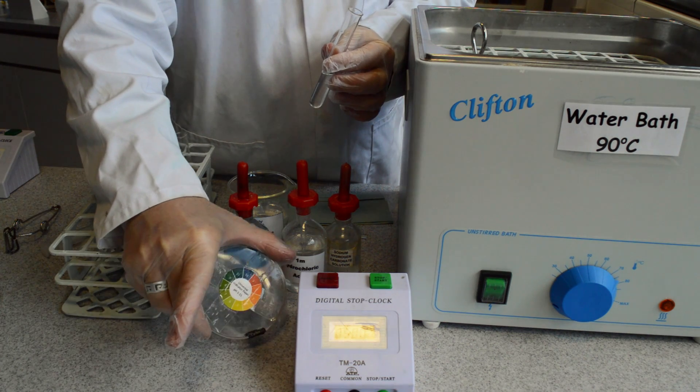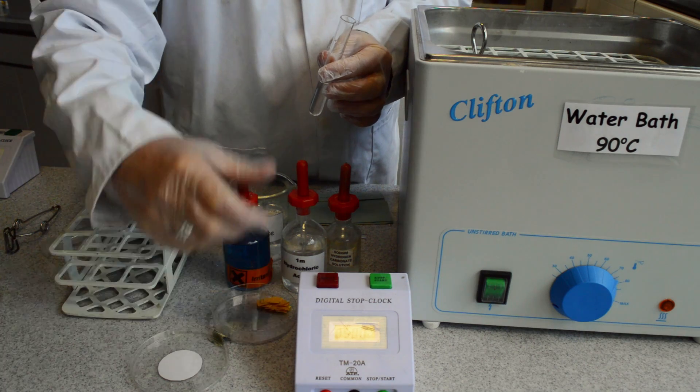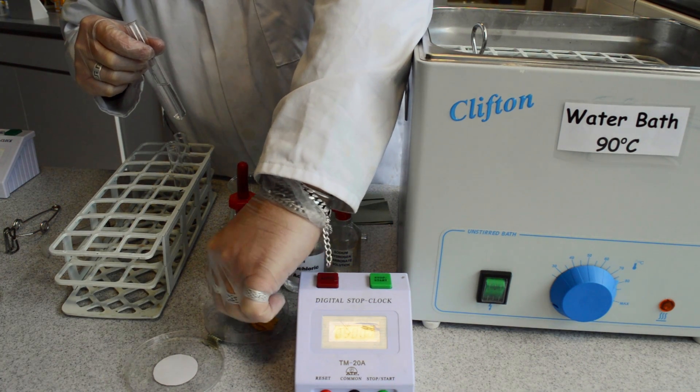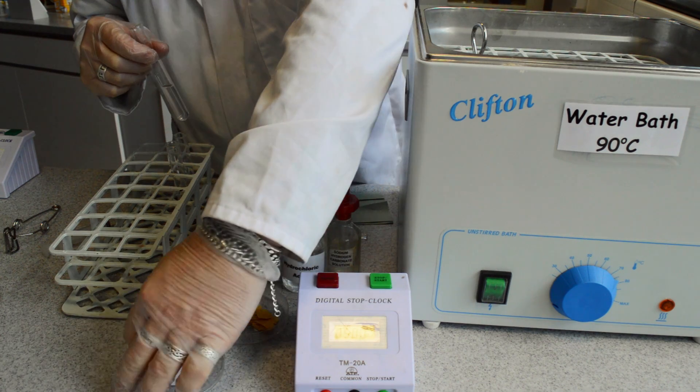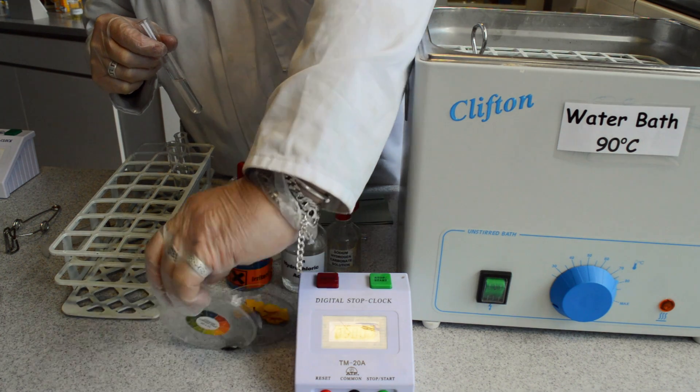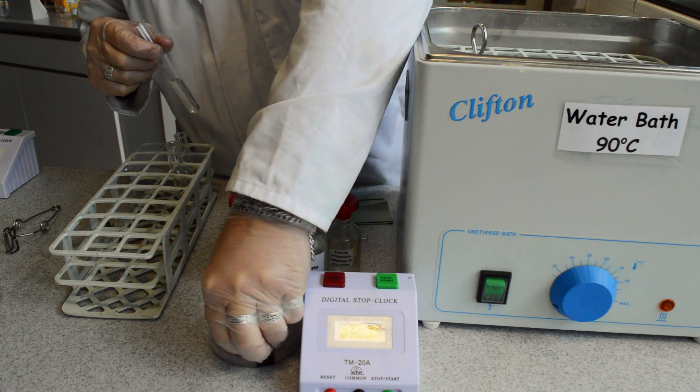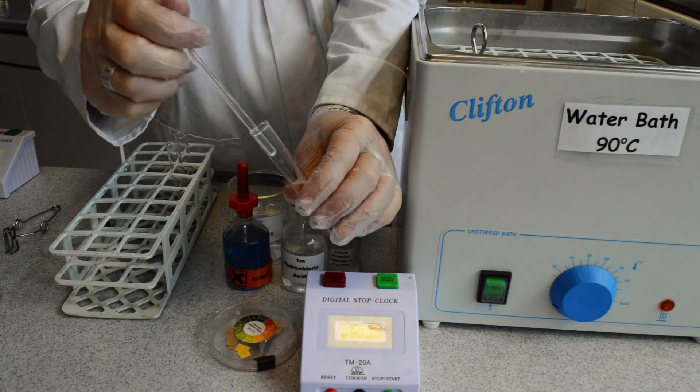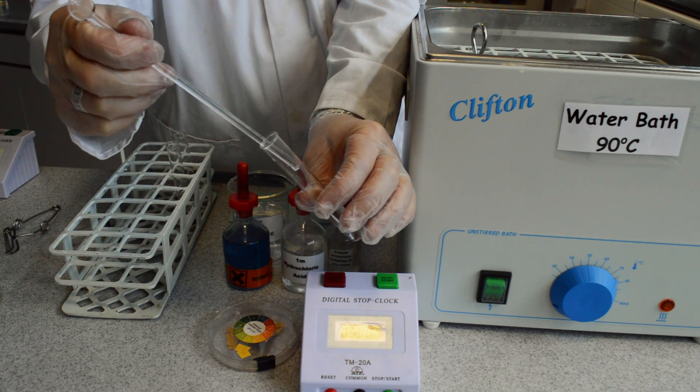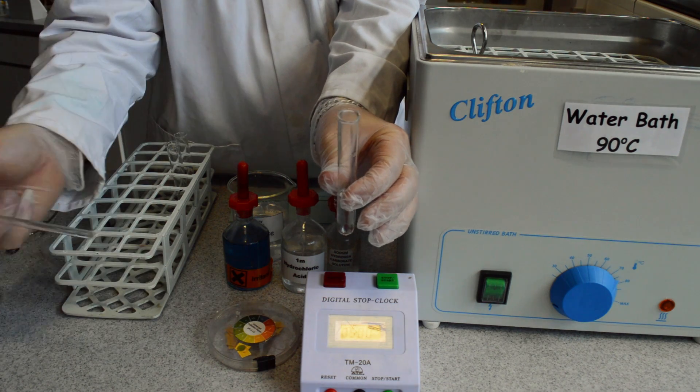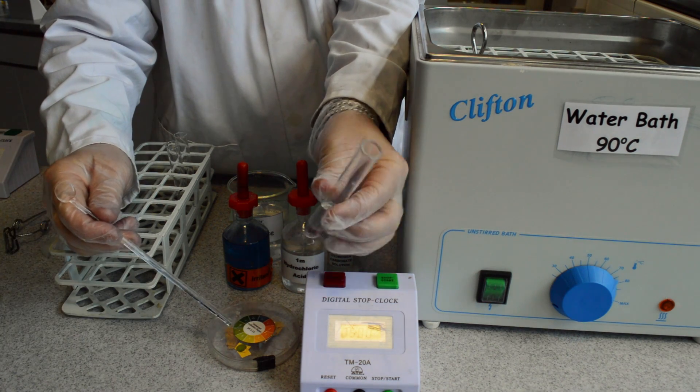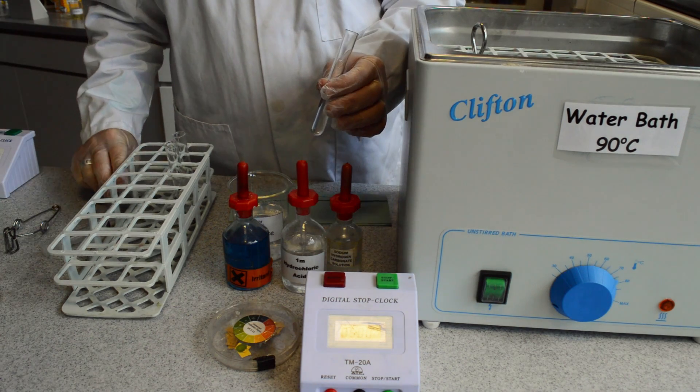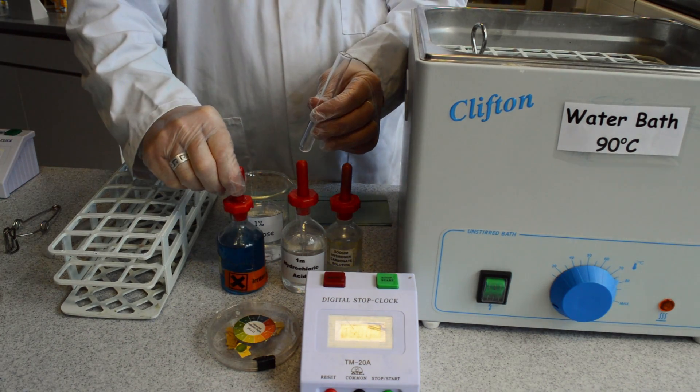You can see on the sample pot containing the universal indicator papers there is a colour chart. To find out whether your sample has been neutralised, please use a glass rod dipped into the sample and then placed onto the universal indicator papers near the colour chart. Then you can easily see that the sample has been neutralised and can be used for the next stage in the test.